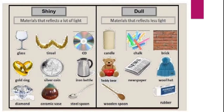Non-lustrous objects are also called dull materials and they do not reflect any light or they reflect very less amount of light. Examples are like candle, chalk, brick, teddy bear, wooden spoon, etc.